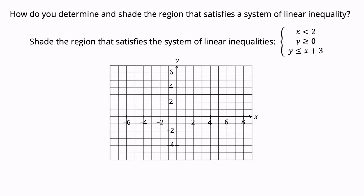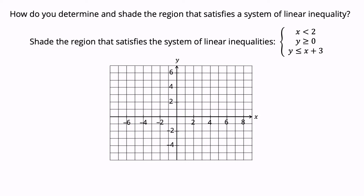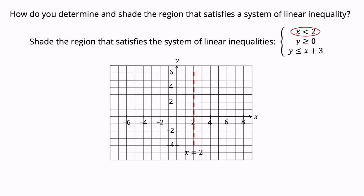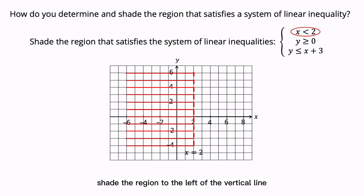Shade the regions that satisfy the system of linear inequalities. Consider the system of inequalities: X less than 2, Y greater than or equals to 0, and Y less than or equals to X plus 3. The inequality X less than 2 is shown by a vertical dashed line at X equals to 2. X less than 2 shades the region to the left of the vertical line.